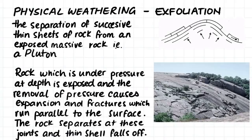Exfoliation is another type of physical weathering. Exfoliation is the separation of successive thin sheets of rock from an exposed massive rock. For example, plutons which form deep in the earth as one massive rock can rise to the surface and are often affected by exfoliation. Exfoliation occurs because the rock which is under pressure at depth is exposed, and this removal of pressure causes the expansion of the rock and fractures which run parallel to the surface of the rock. Along these fractures the rock separates and the thin sheets just fall off.